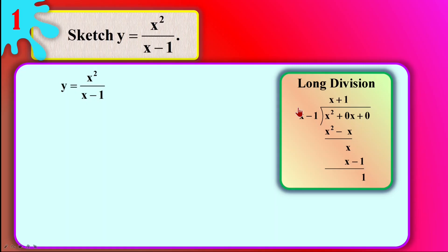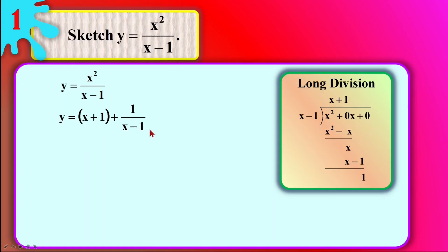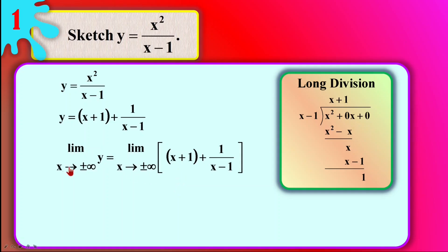If you have no idea what long division is, I suggest you search for my video about long division — I will leave a link on top. Now in this long division, you will create a quotient and a remainder, and write the equation in the format of quotient plus remainder divided by divisor. Then we will take this equation and look for the limit of it: limit x moving to positive infinity or x moving to negative infinity. Have you got any idea what they are?